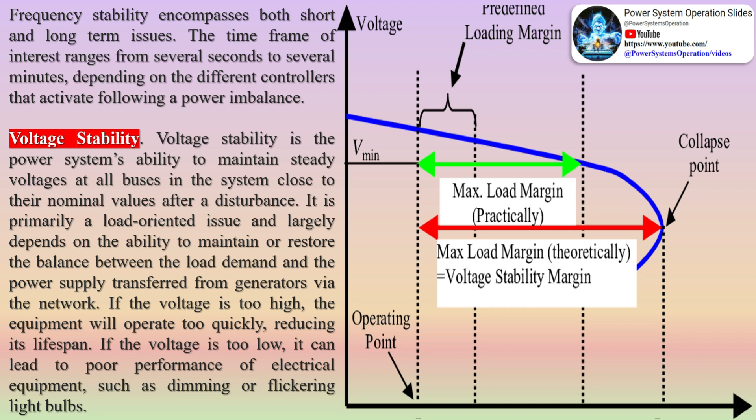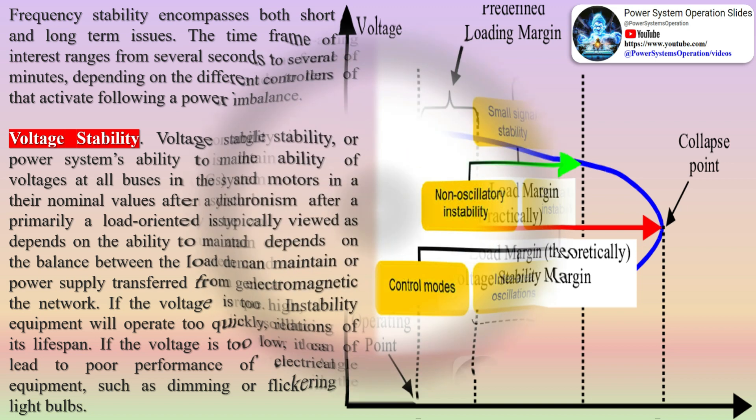Over-frequency can cause equipment and infrastructure to overheat or burn, while under-frequency can reduce their performance. Frequency stability encompasses both short and long-term issues; the time frame of interest ranges from several seconds to several minutes, depending on the different controllers that activate following a power imbalance.